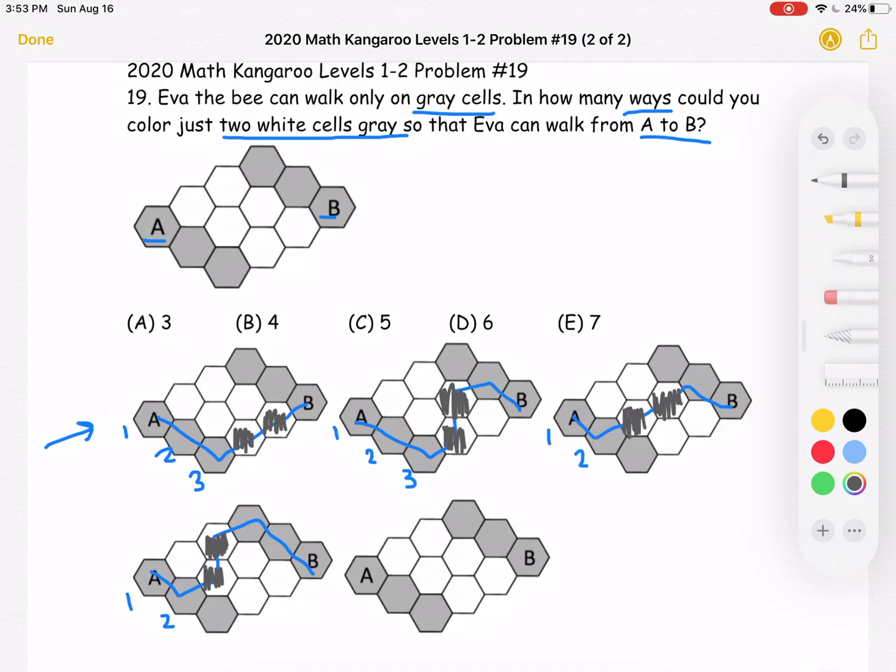And then for our last way, there's no other way that we can go from cell A to cell 2, and then to B, and cross through two white ones. So we're going to go directly from A, straight across, and then down to B, and go through these two white cells, which we color gray.